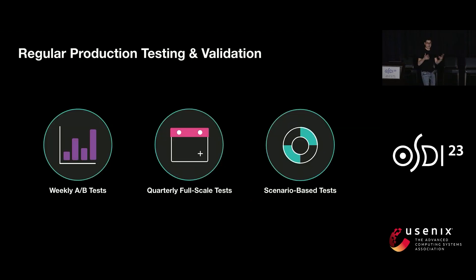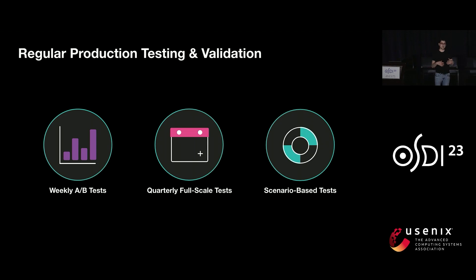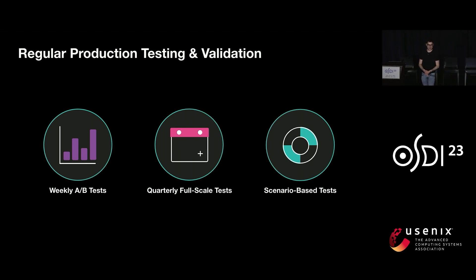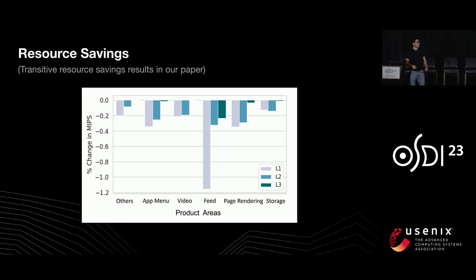We need to make sure this mechanism works when we need it. So we have regular production testing and validation in our fleet: weekly A/B tests where for a subset of knobs we have control and test groups measuring user impact changes; quarterly full-scale tests; and scenario-based tests for predictable events like New Year's Eve or the World Cup. Here's an example of resource savings measured for a subset of knobs defined for the Facebook app. You can see that going from DEFCON level three to DEFCON level one, there's a large span in resource savings, which makes sense as level one trades more user impact for more resource savings.